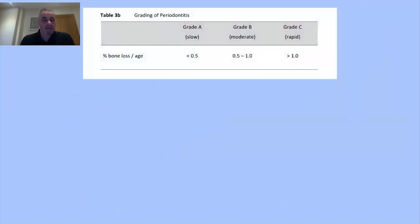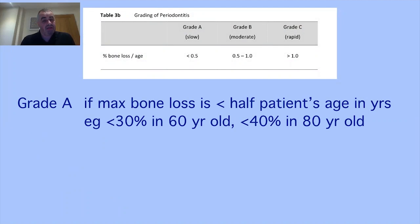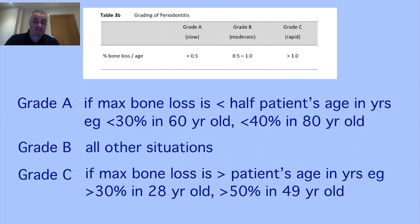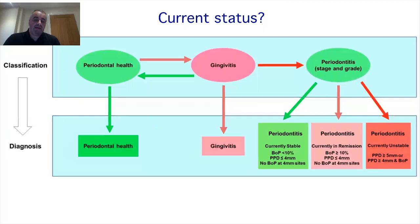To apply grading: it's a Grade A if the maximum bone loss at the worst-affected site is less than half the patient's age — so a 60-year-old with less than 30% bone loss is an A; an 80-year-old with less than 40% is an A. It's a Grade C if maximum bone loss is greater than the patient's age. If it's not an A and not a C, it's a B. Very simple rules to learn.